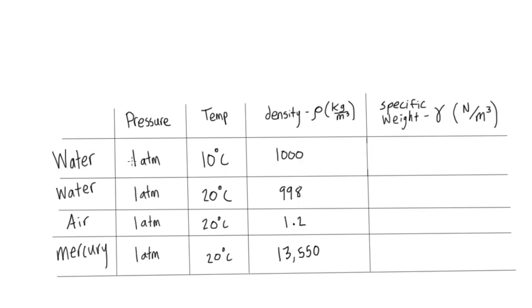So we'll have different fluids here, given with atmospheric pressure and associated temperature as well. You'll notice that the density of water at 10 degrees Celsius is a little bit different than the density of water at 20 degrees Celsius. So these things change. If you have a solid, they're generally a lot more consistent than these.